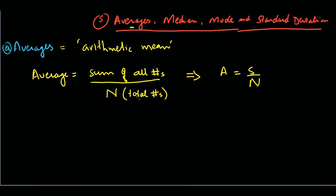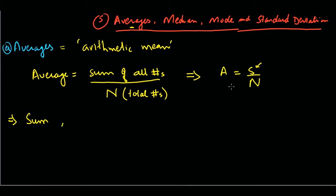The GRE would never ask you to simply calculate an average from given numbers. They would usually give you the average and ask you to find something else. One common way the GRE tests this is by using the sum — the numerator. If we rearrange average = sum/n, we get: sum = average × n. This is a very important rearrangement.